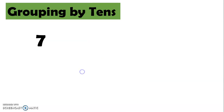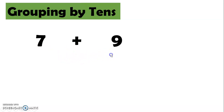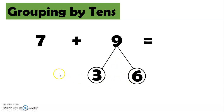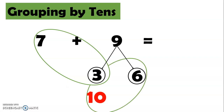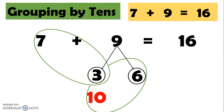Let's try another: 7 plus 9. Let's look at 9 first and think of 2 numbers that will help us make the sum of 9 and one that will help us get a sum of 10 when added with 7. So we have 3 and 6. Since 7 and 6 will not make 10, let's try 7 and 3 — 7 plus 3 equals 10. Now that we have 10, let us add it with 6 and we have 16. So 7 plus 9 equals 16.